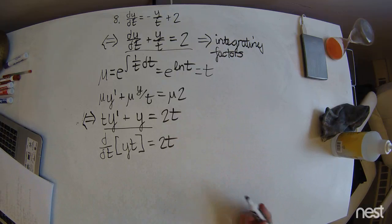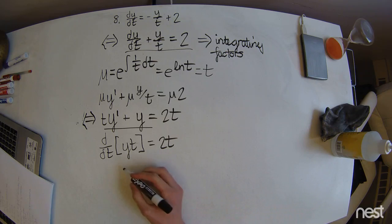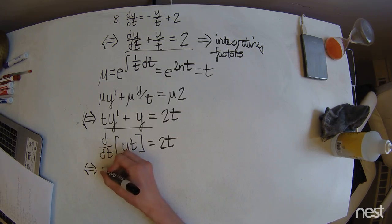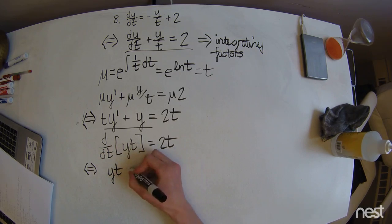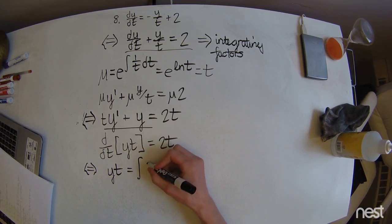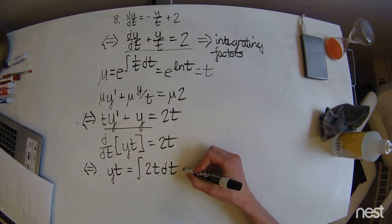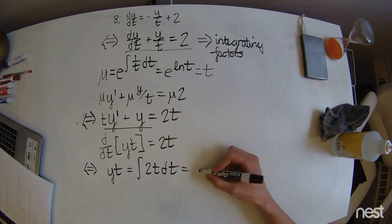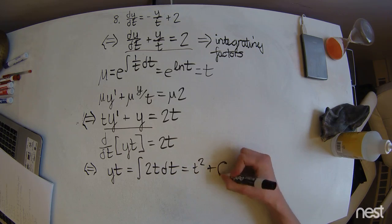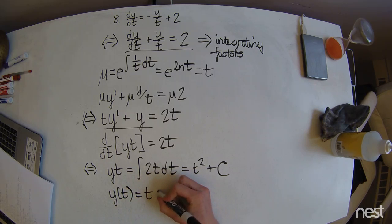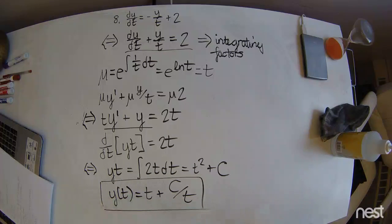The nice thing is we can just integrate both sides with respect to t to get rid of this derivative with respect to t. Now we simply solve out that integral — that's going to be t squared plus c. And then we can rework this into an explicit form: y of t equals t plus c divided by t. And there is our solution.